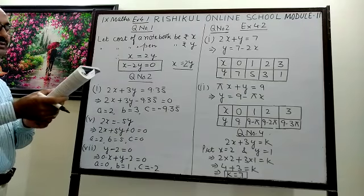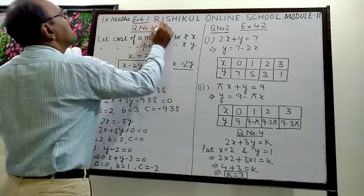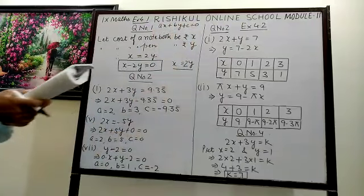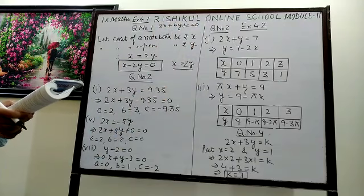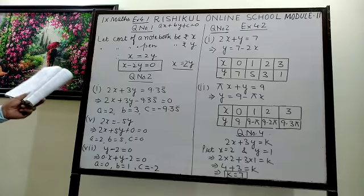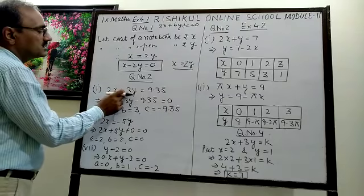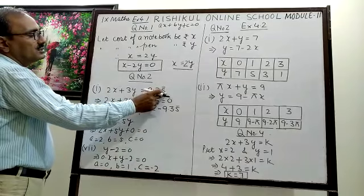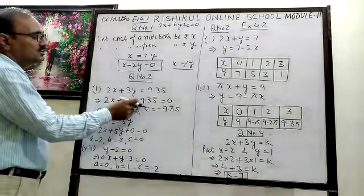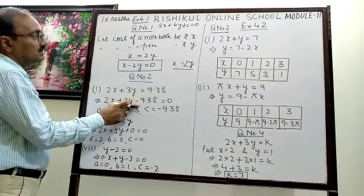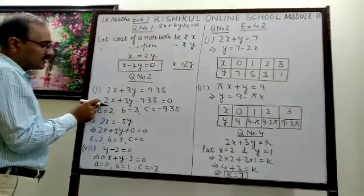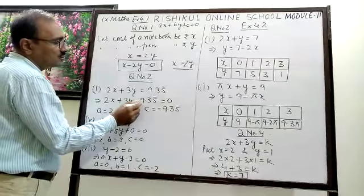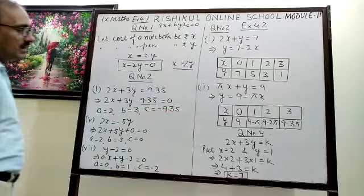Question number 2: express the following linear equations in the form Ax plus By plus C equals 0, and indicate the values of A, B, and C in each case. For the first part, 2x plus 3y equals 9.35 bar — transfer 9.35 bar to the left side and the sign will change. So A, the coefficient of x, is 2; B, the coefficient of y, is 3; and the constant C is minus 9.35 bar.